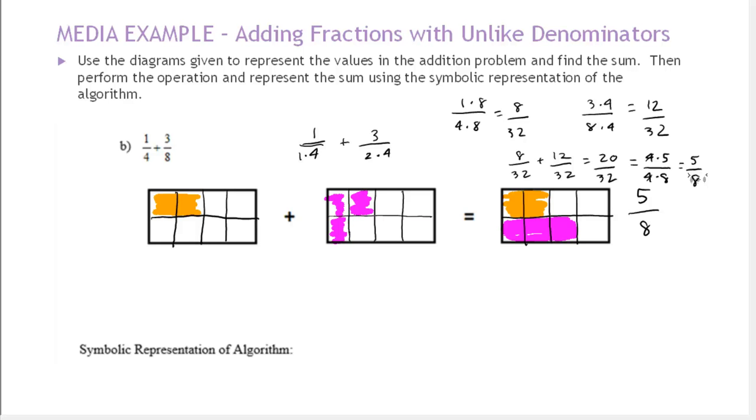So let's look at this now using the... So this 32 was a common multiple, but it wasn't the least common multiple. So now let's do it with the least common multiple or least common denominator, which we found was 8. And again, we found that by looking at these two quantities, we could multiply the two numbers, 4 times 8, and divide by their greatest common factor of 4, which gives us 8.